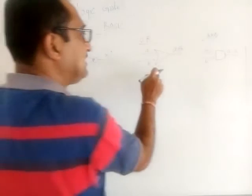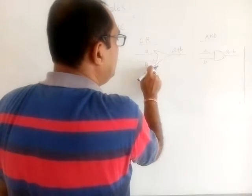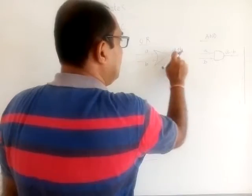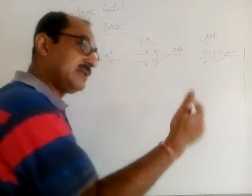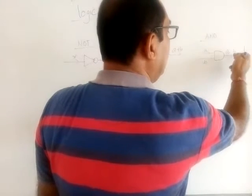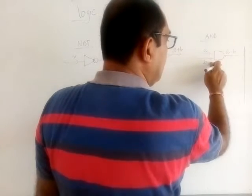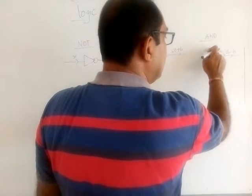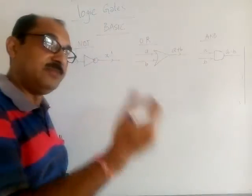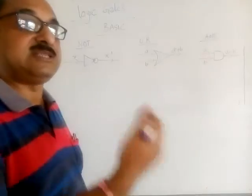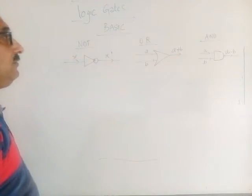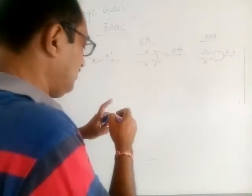For instance, instead of two inputs, if we pass three currents A, B, C, then the output also becomes A plus B plus C for OR, or A dot B dot C for AND. If we have four inputs A, B, C, D, then the output will be A dot B dot C dot D. These three gates — NOT, OR, and AND — are called basic gates.